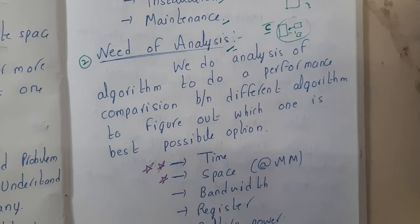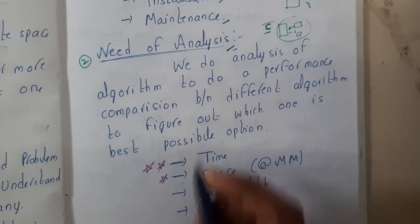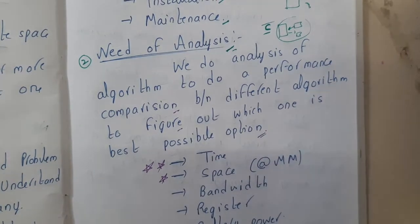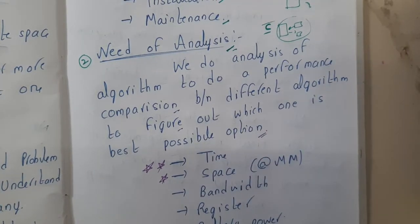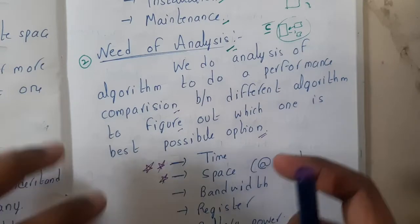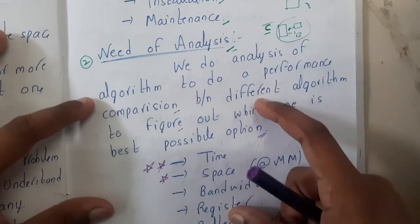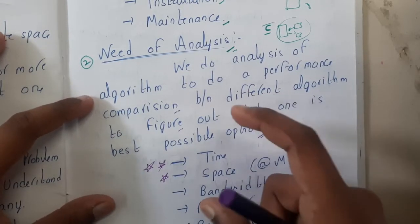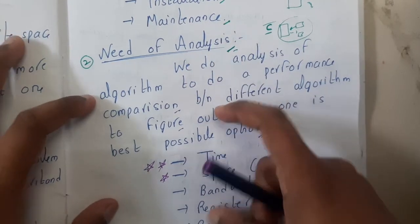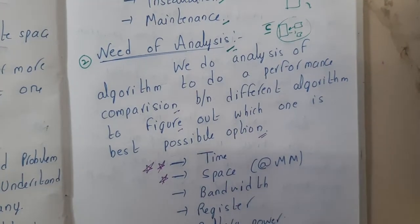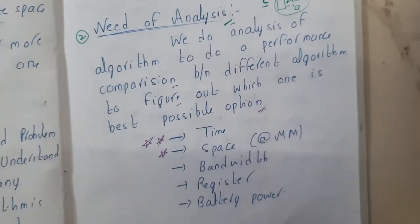We do need analysis of algorithms to do performance comparison between different algorithms, to figure out which one is the best possible algorithm. Assume that you and your friend have both designed an algorithm for some particular process - say for the addition operation, you both did two algorithms. Among these two algorithms, how can you decide which is best? Based on performance or based on some analysis factors, you can say which is performing really good compared to your friend's.